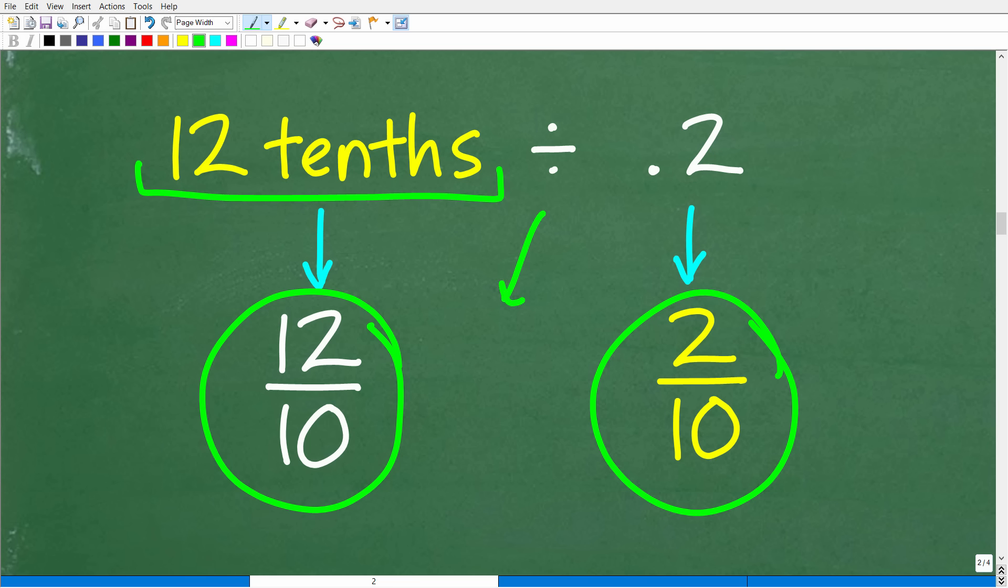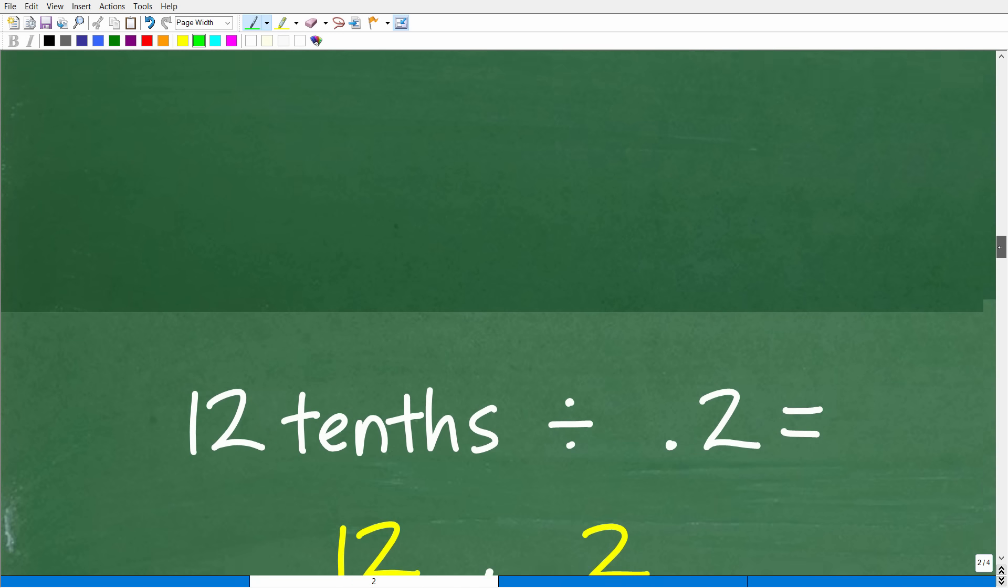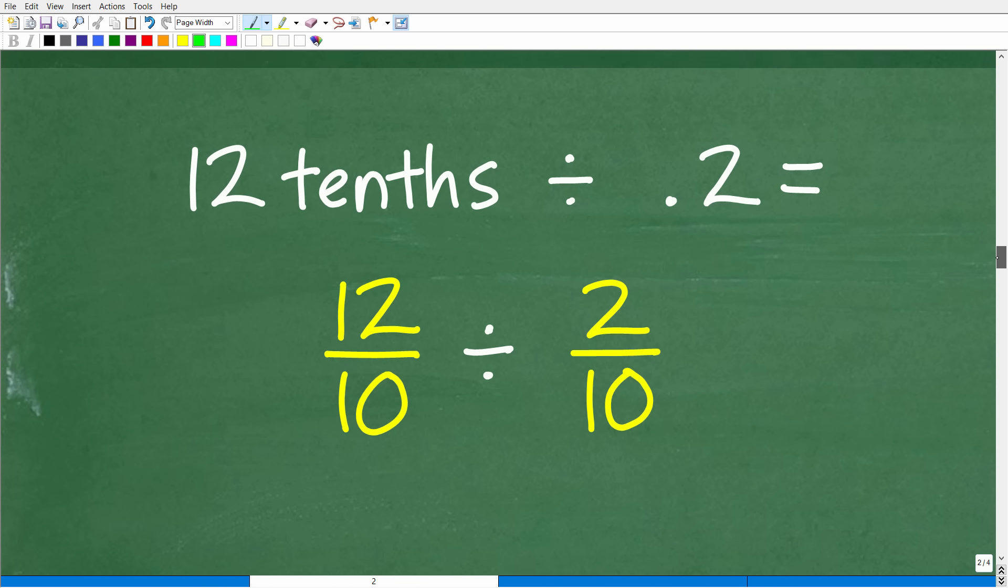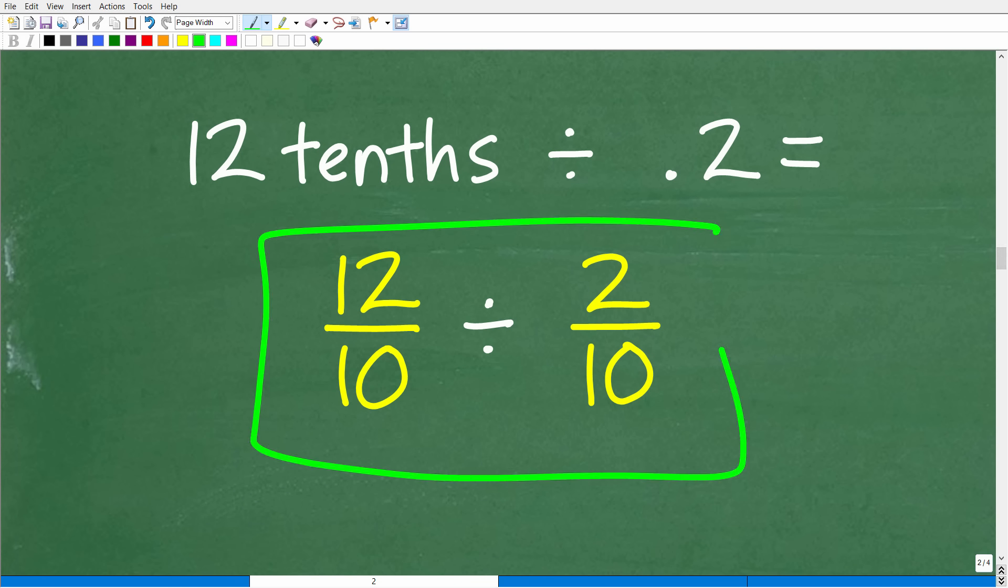What we're going to do here is rewrite our 12 tenths as 12 over 10, and our 0.2 we're going to think of as 2 tenths. So this is going to be a fraction division problem. Now, some of you might be saying, should we reduce these fractions right here? It's always a good idea to reduce your fractions, but this is going to be super easy to solve. Our problem here now is 12 tenths divided by 0.2 is equivalent to 12 over 10 divided by 2 over 10.